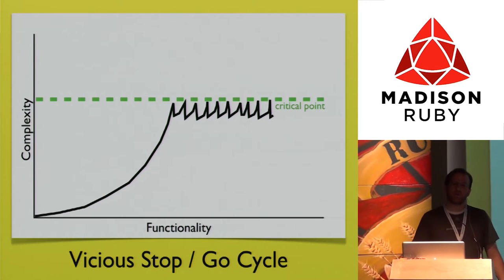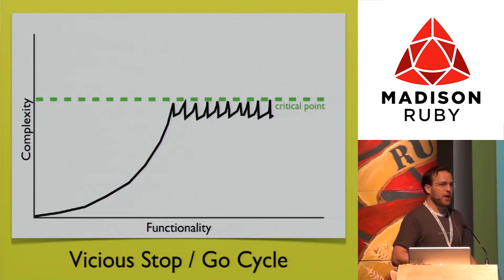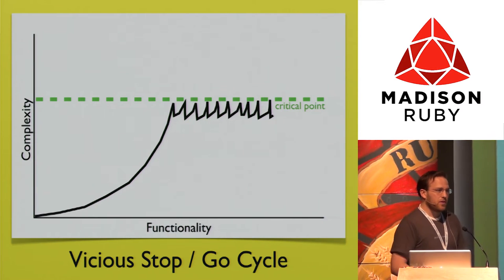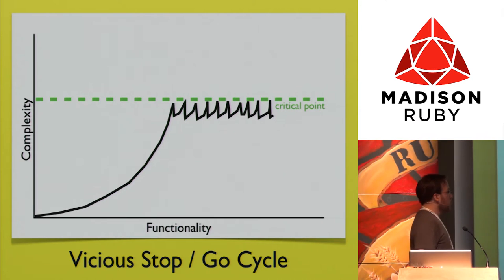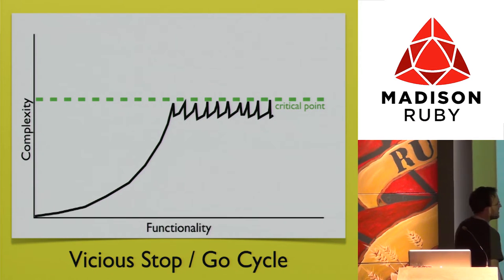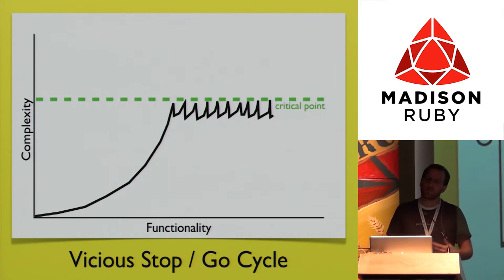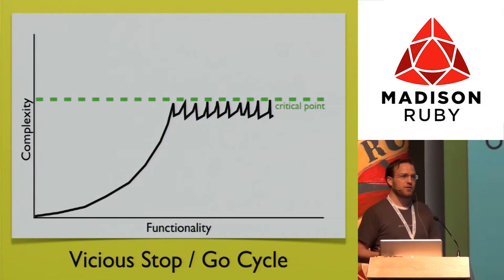You get in this vicious stop and go cycle where you clean just enough to move forward again, then you're back at it adding a bunch of changes, then you're stuck again, then you clean some stuff, add more changes. At this point the complexity of the system is overall at its peak. This vicious stop and go cycle is the most inefficient way you can work on your project because you're going as slow as possible—the system is so hard to maneuver around.